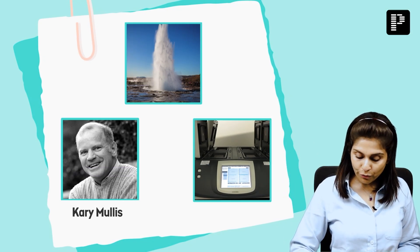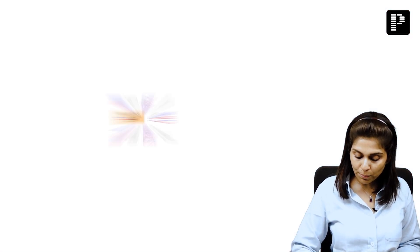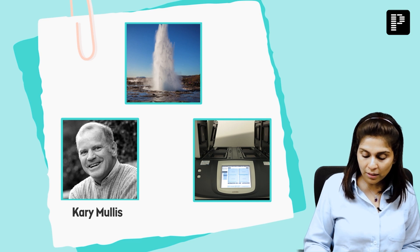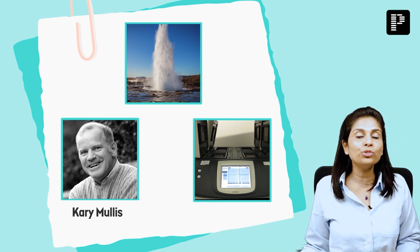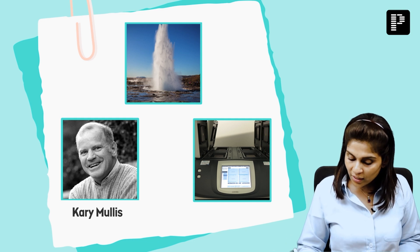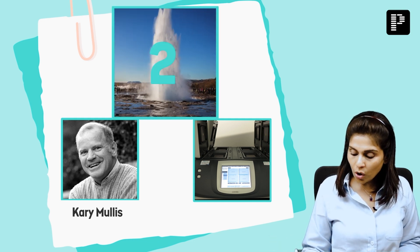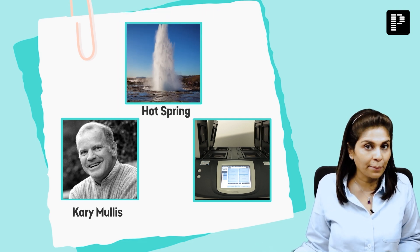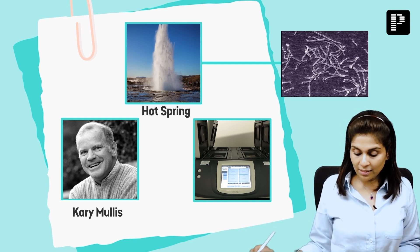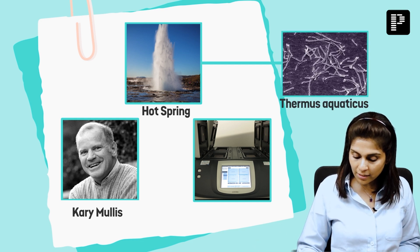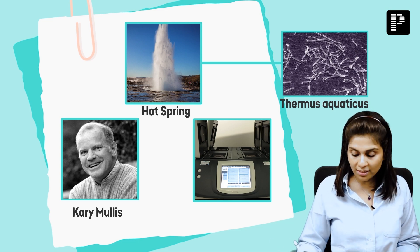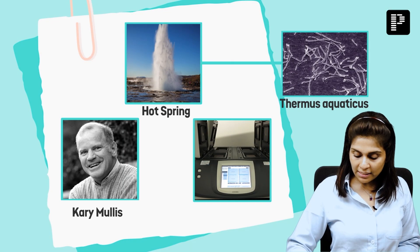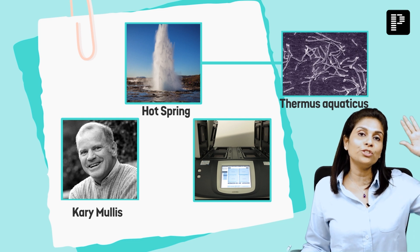For the denaturation step in PCR, the temperature has to be 95°C. This means any enzyme used for PCR must be thermostable — you cannot use a human DNA polymerase. The second image is a hot spring. An organism that lives in a hot spring will have a thermostable enzyme. That organism is Thermus aquaticus, which is why the DNA polymerase used is Taq DNA polymerase.